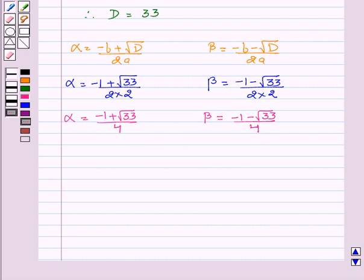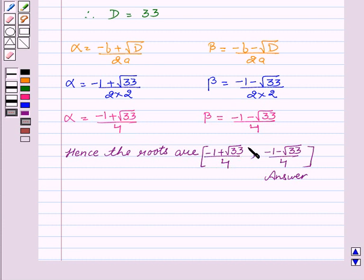Hence, the roots are (-1 + √33) / 4 and (-1 - √33) / 4, which is the required solution.